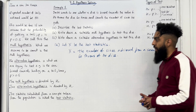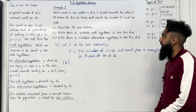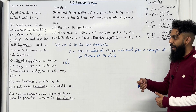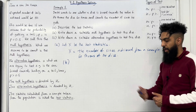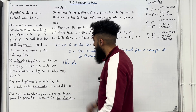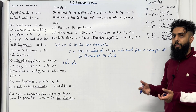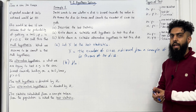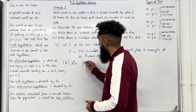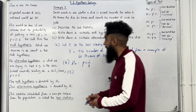Let's have a look at Part B of the example: write down a suitable null hypothesis to test this dice. The null hypothesis is denoted by H₀. The null hypothesis is what we assume to be correct, so the probability of getting a 6 will be 1/6. Therefore, H₀: P = 1/6.